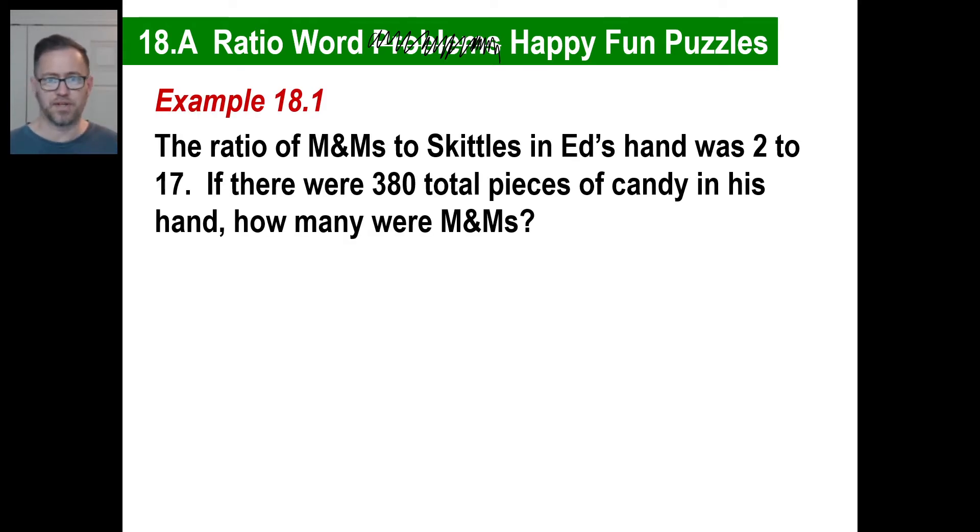The ratio of M&Ms to Skittles in Ed's hand was 2 to 17. If there were 380 total pieces in his hand, how many were M&Ms? Okay, well very quickly, you've got the ratio of M&Ms to Skittles was 2 to 17. So let's just go, you know, M&Ms to Skittles, the entire thing is 2 to 17. In other words, for every 2 M&Ms he has, he has 17 Skittles.